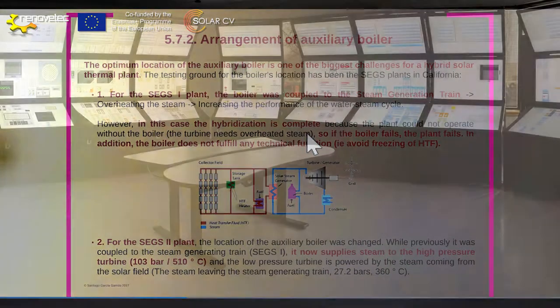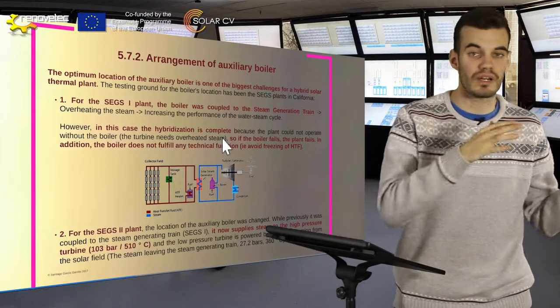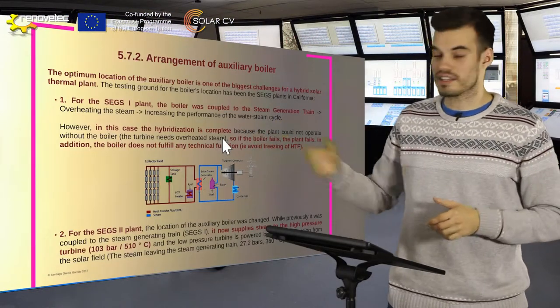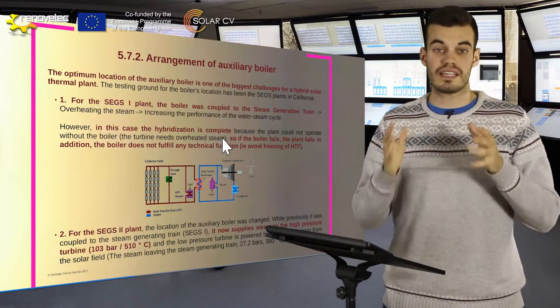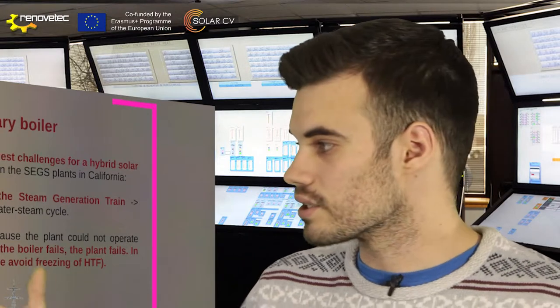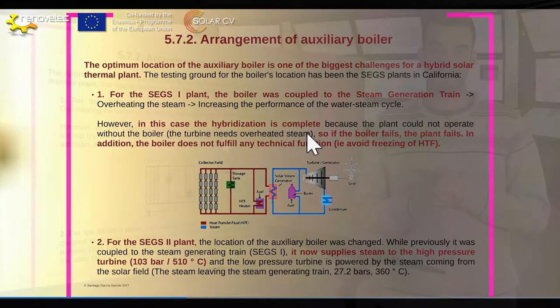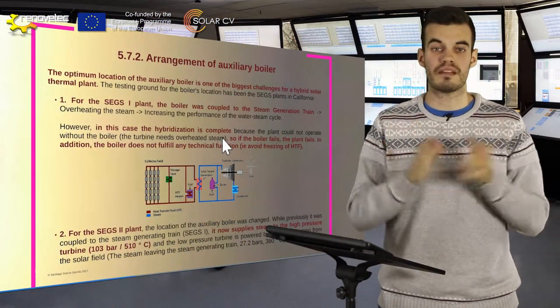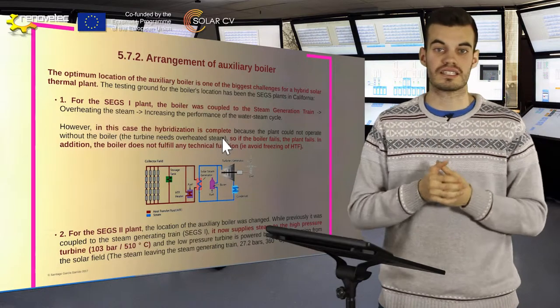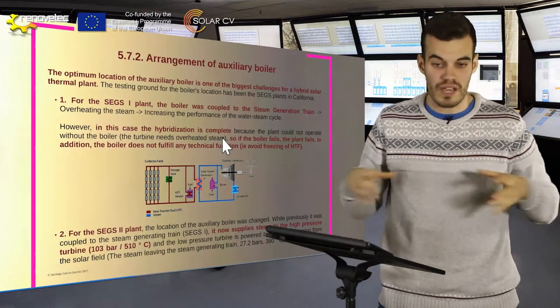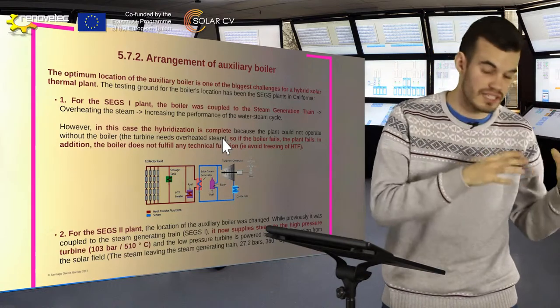Now we must look at the different positions of this natural auxiliary boiler throughout history. The origin of this auxiliary boiler is in the SEGS plant in California in the 1980s, and the first position was coupled to the steam generation train, so the function was overheating the steam. However, in this case the hybridization is complete, because the steam turbine in a PTCSP plant must have overheated steam at its input.